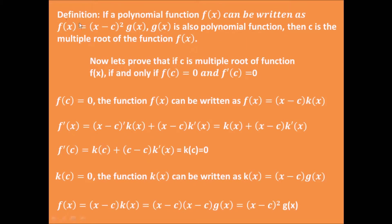Here is the definition. If a function f can be written as (x minus c) squared times another polynomial function, then c is a multiple root for the function f. So in order to verify whether or not a point is a multiple root of a function, we have to rewrite the function in this form.